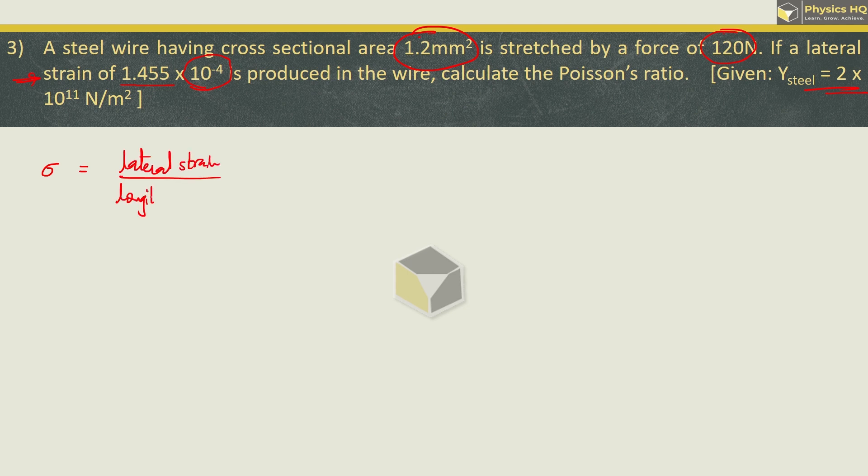Young's modulus of steel is 2 × 10^11. Now Poisson's ratio is given by lateral strain upon longitudinal or tensile strain. Lateral strain is 1.455 × 10^-4. Longitudinal strain we need to find. What do we need for longitudinal strain? We know Young's modulus is longitudinal stress upon longitudinal strain. So from this we can find out the strain.